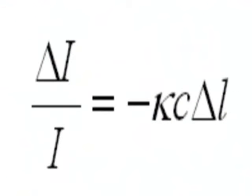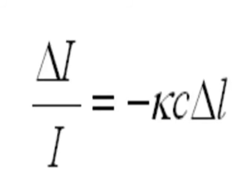So delta I over I is going to be proportional to concentration and delta L, the length of that strip of the sample. And so we put a constant of proportionality in there, which I'm calling kappa. And since the way we've defined delta I, delta I is always negative, that's where the negative sign comes from.